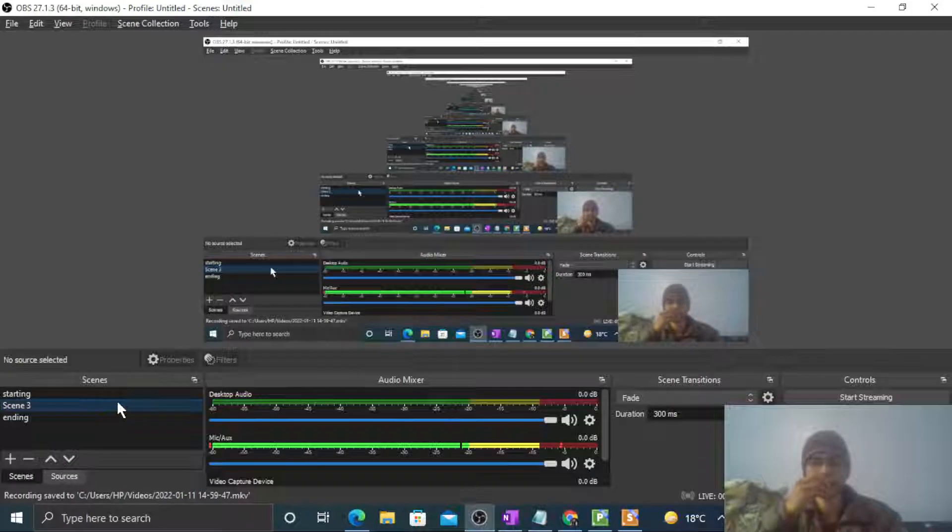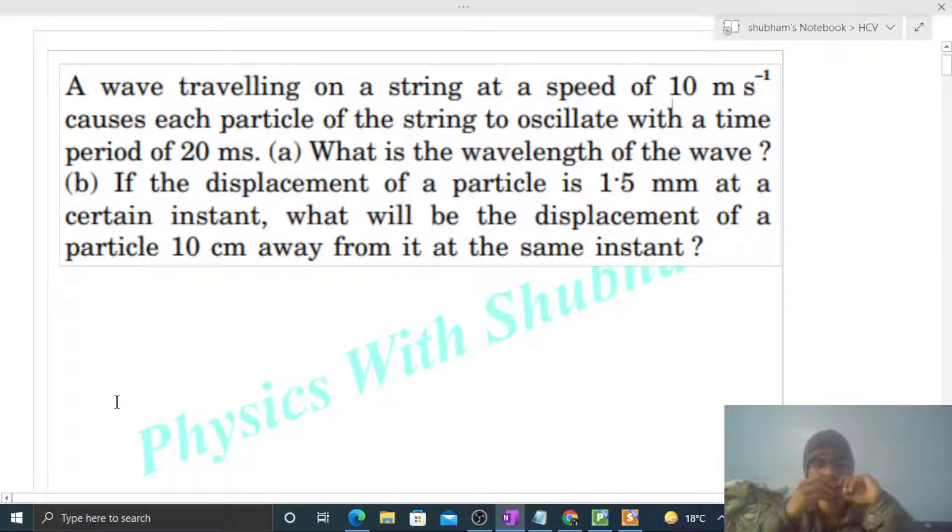Okay, hi everyone. So today let's discuss one interesting problem. It says a wave traveling on a string at a speed of 10 meter per second causes each particle of the string to oscillate with a time period of 20 millisecond. What is the wavelength of the wave?